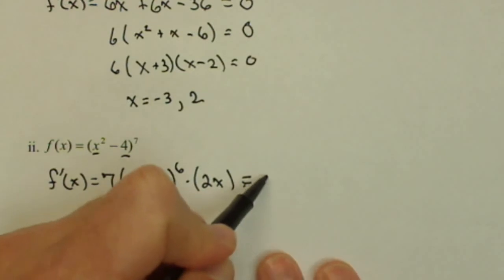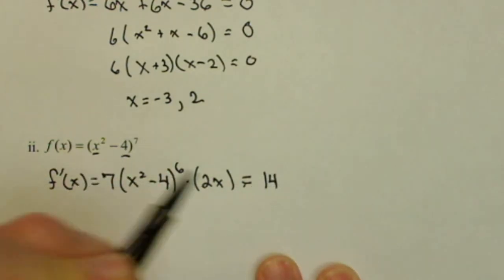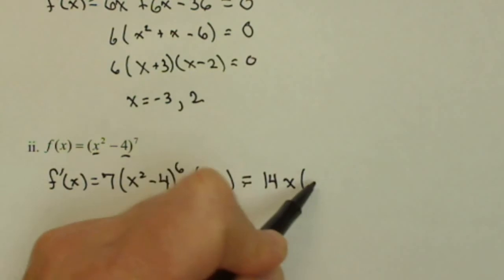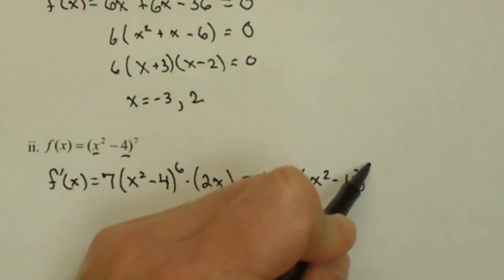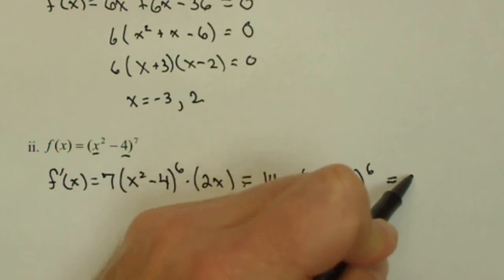Before we find zeros, sometimes it's easier to simplify. So 14x(x² - 4)⁶. We're going to set that to 0.